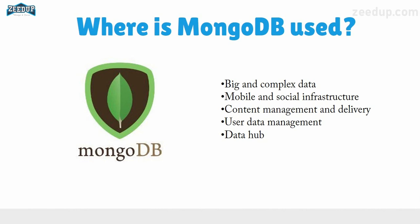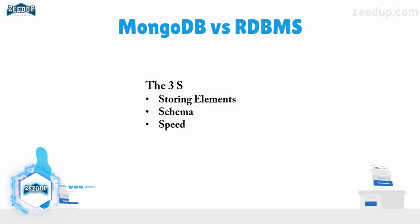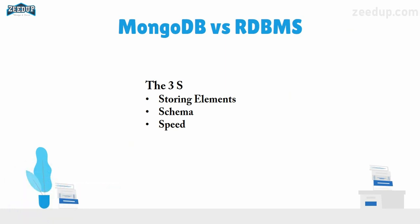Up until now we have discussed MongoDB's advantages, features, and use cases. Now let's look at the differences between MongoDB and a relational database management system. We can compare these two on the basis of three criteria, known as the three S's of comparison: Storing elements, Schema, and Speed.